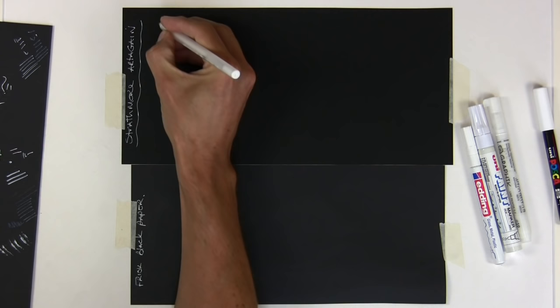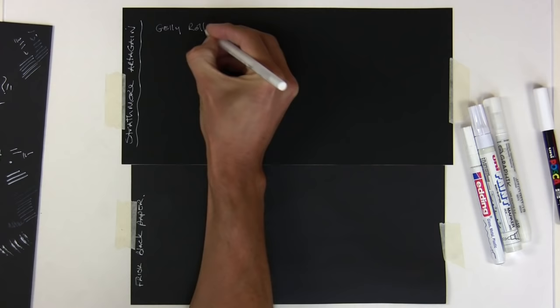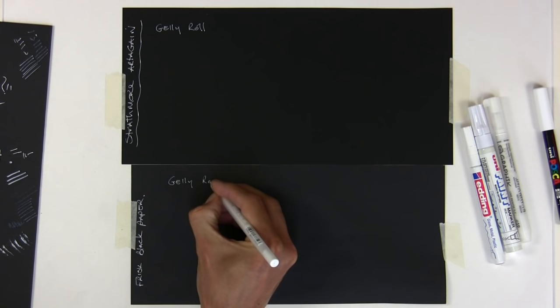Let's have a little go first with the jelly roll, just almost standard writing, so I'm not going slow or anything at all with that. It's nice and white. Let's try it on this paper too. Yep, that's fine, that's nice.